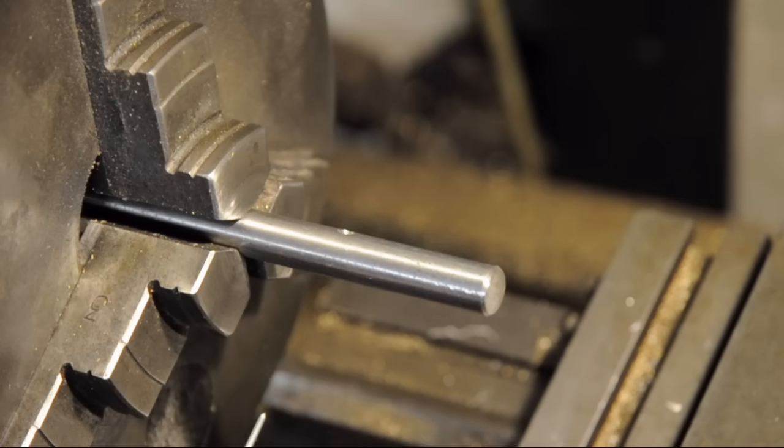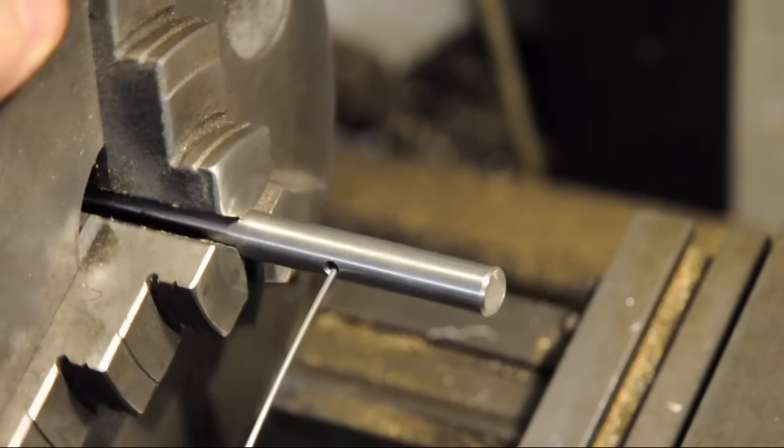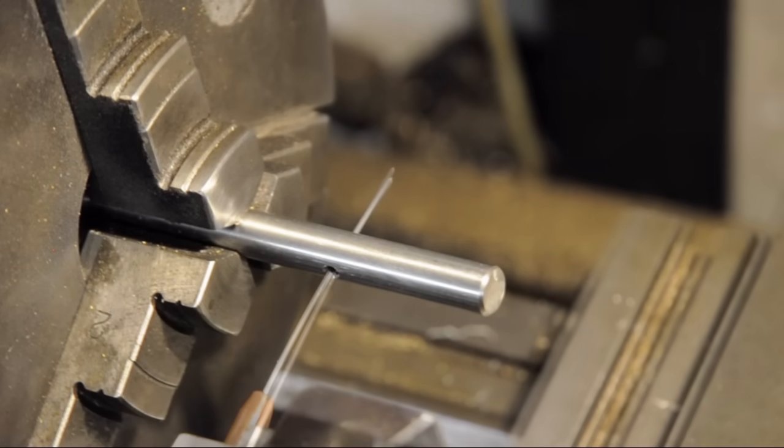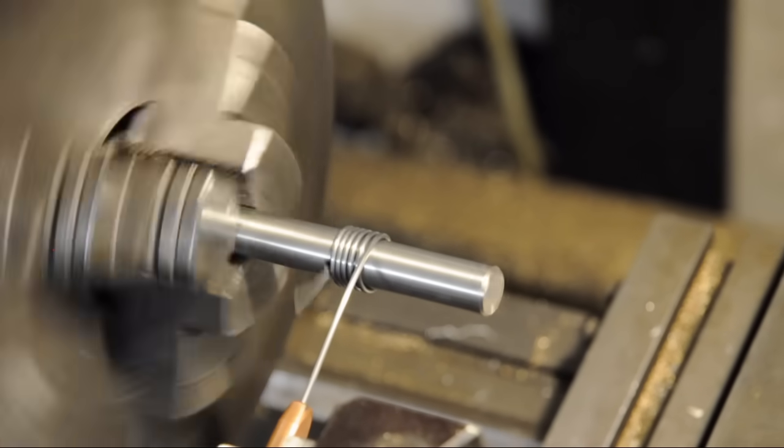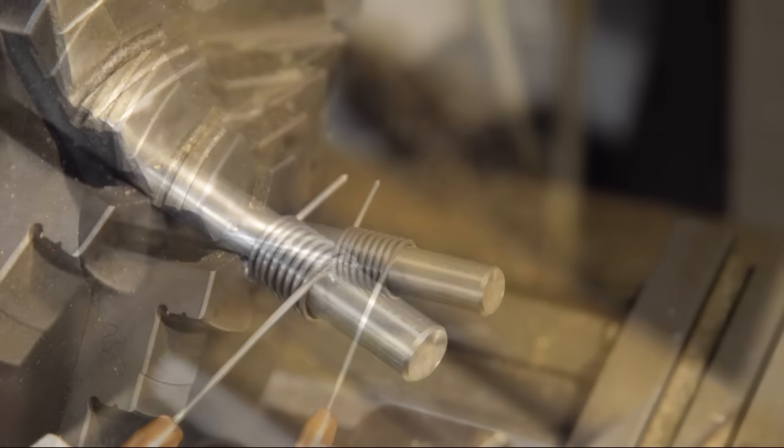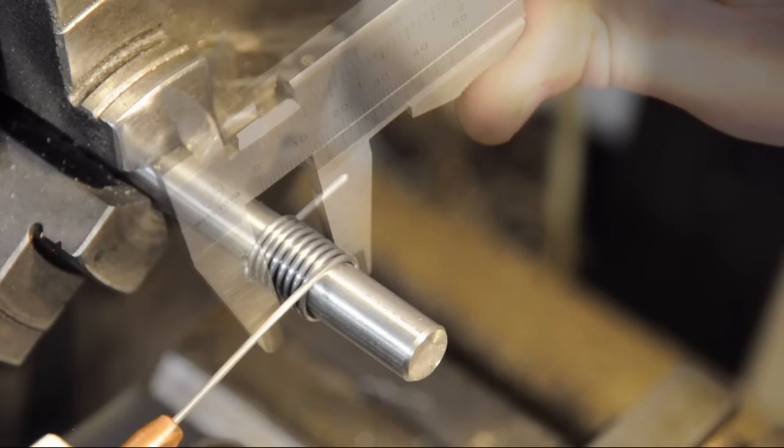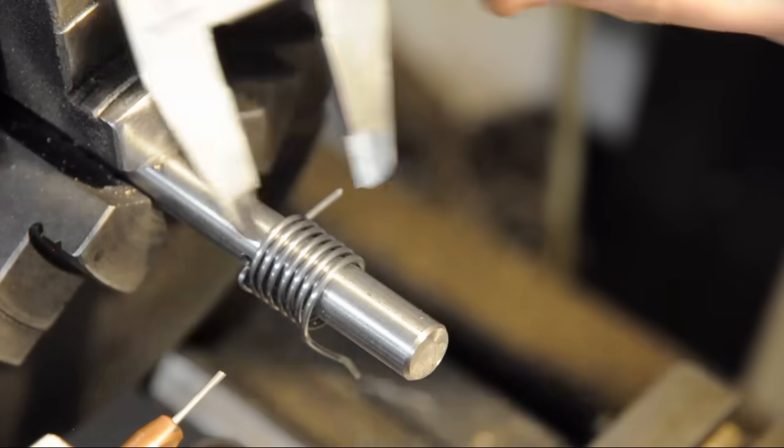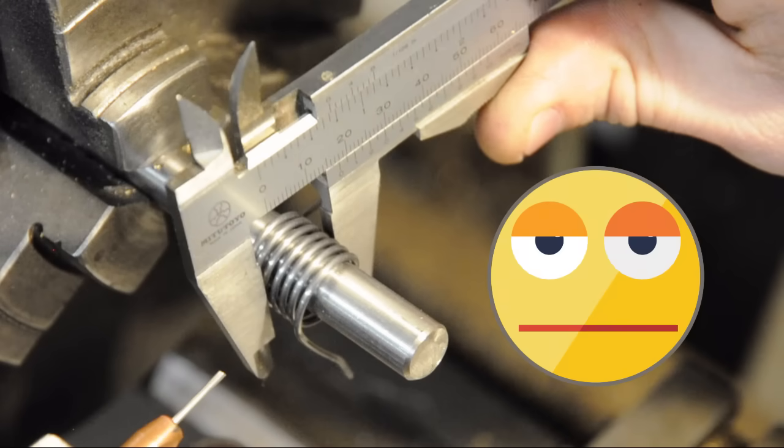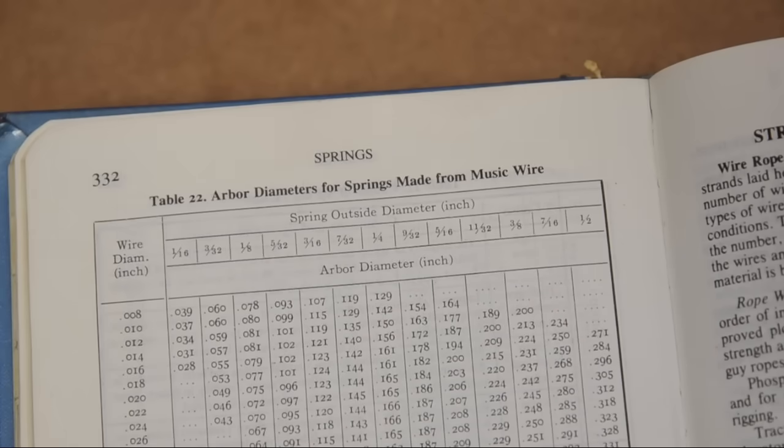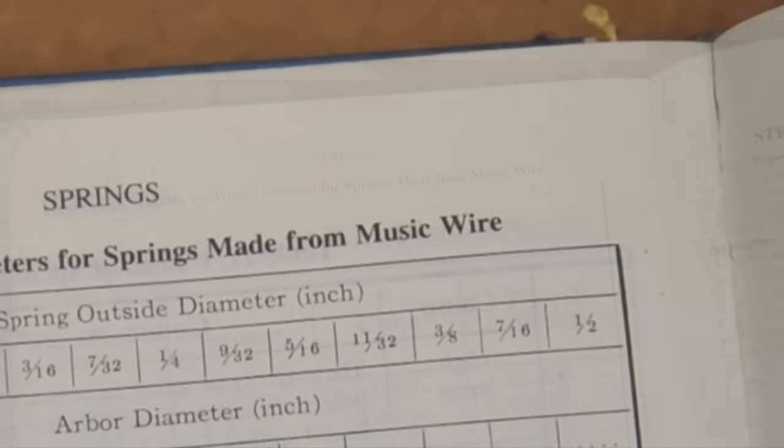The size and shape of the mandrel depend on the spring you're making. The mandrel is undersized to account for the spring back in the wire after forming. The amount of spring back depends on the diameter you're winding to, the diameter of the wire, and the material of the wire itself.